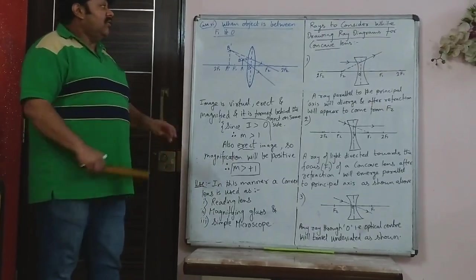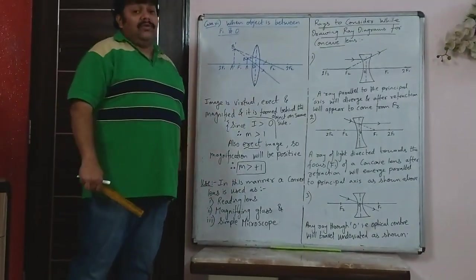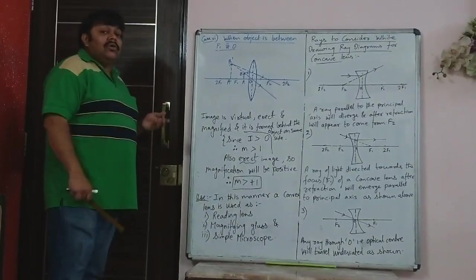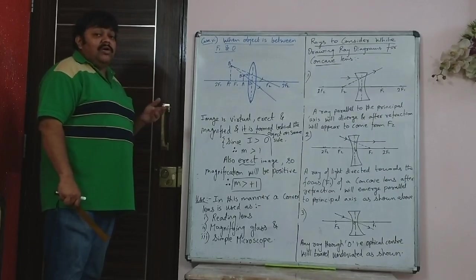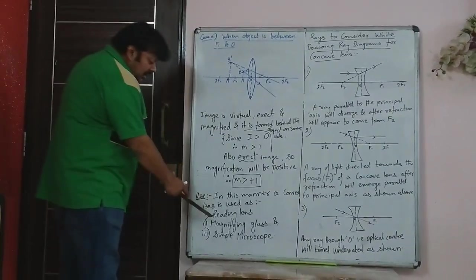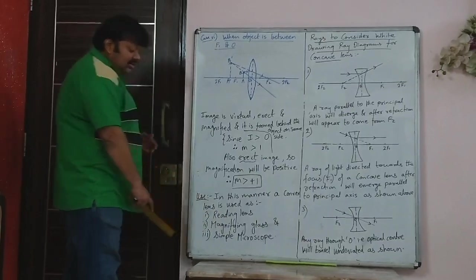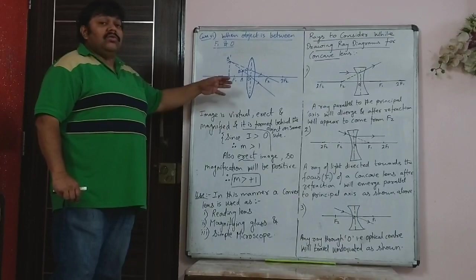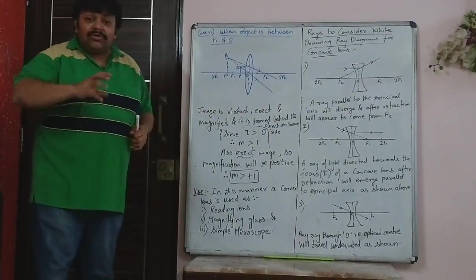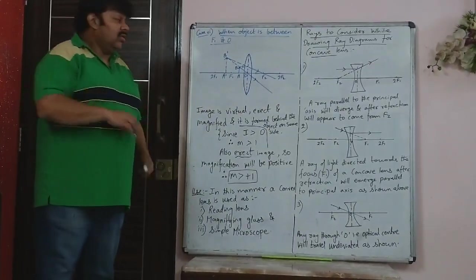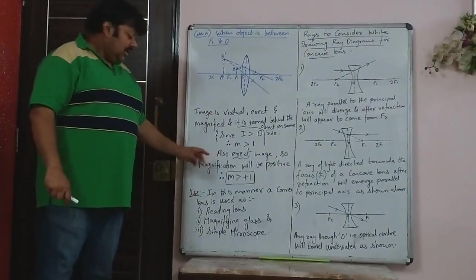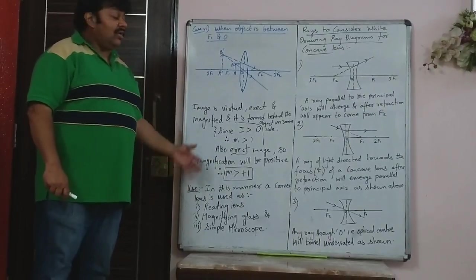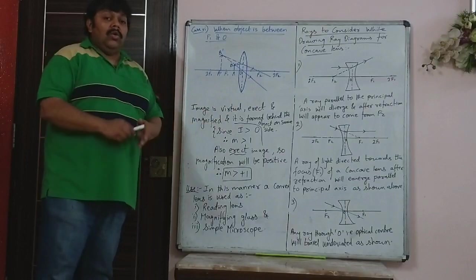Instead of specifying the object position, the exam may ask you to draw a ray diagram for a convex lens used as a reading glass, magnifying glass, or simple microscope — all of these refer to the same case: object between O and F1. Can the image be inverted when you use a reading glass? No — you cannot read an inverted image. So the image has to be erect. Reading glass, magnifying glass, simple microscope — for a convex lens — all require this diagram.